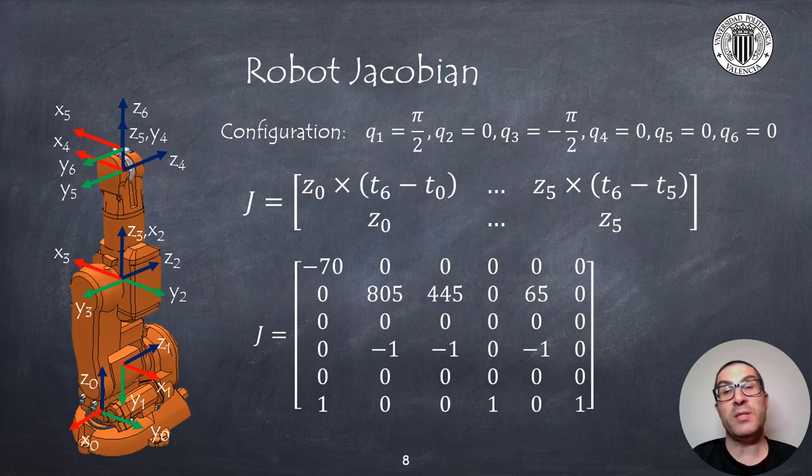Once all these vectors are known we can compute the Jacobian of the robot by using the expression as you can see here. In this case we use this expression because all joints are revolute joints, but remember that in case we have a prismatic joint then in the corresponding column affected by this joint we would just include the vector Z for the linear velocity component. That's the first row. For the second row we will fill it with zeros for the angular velocity component.